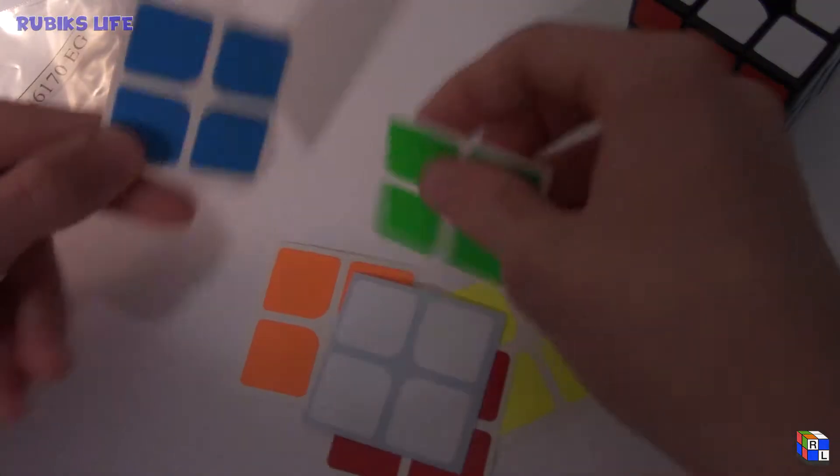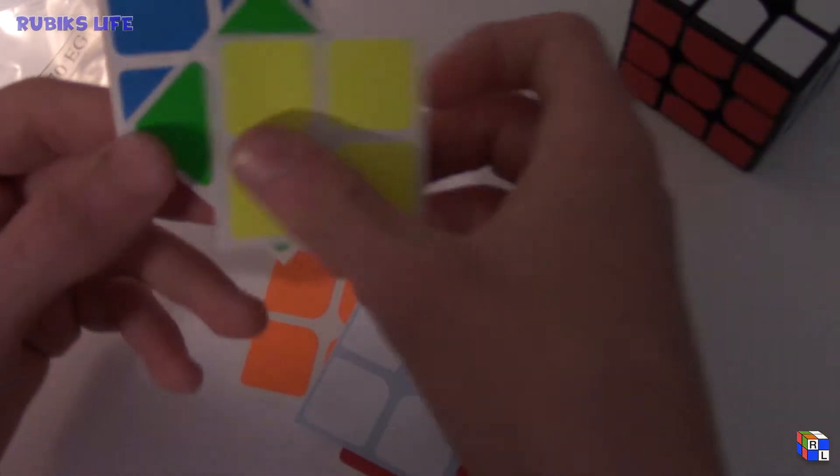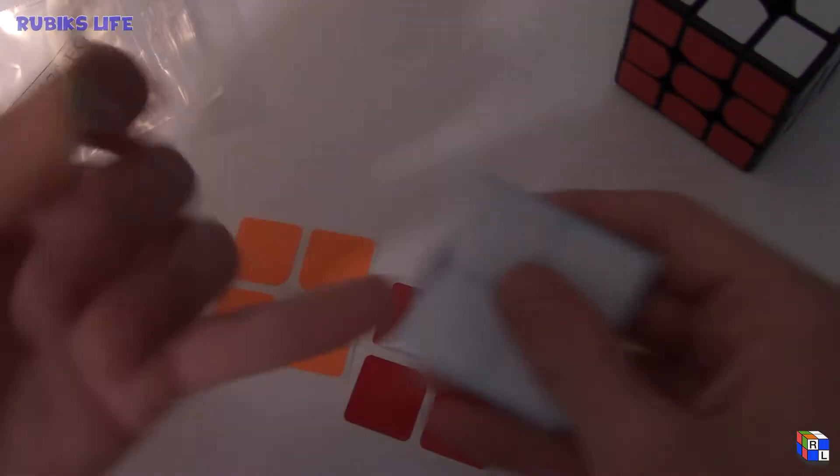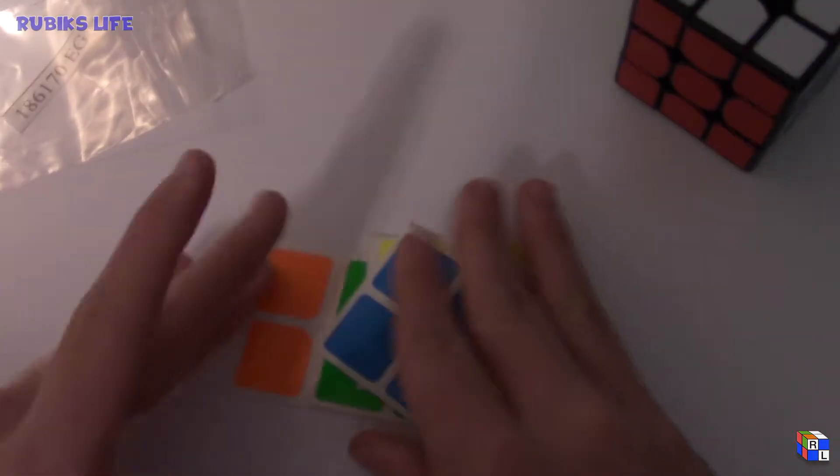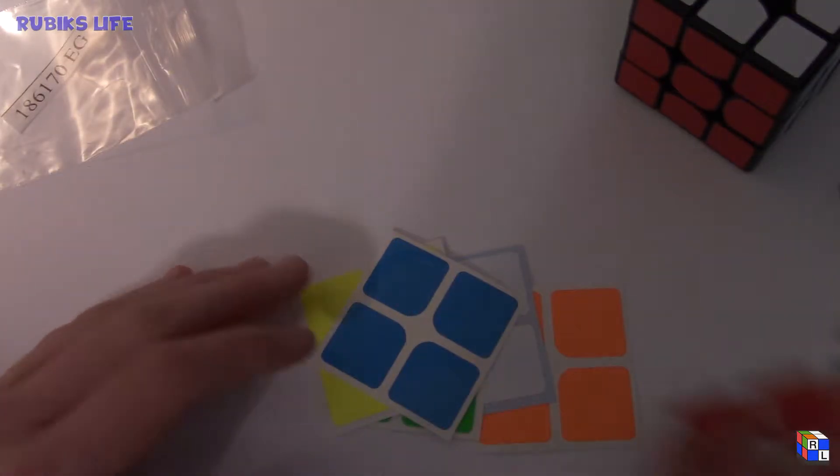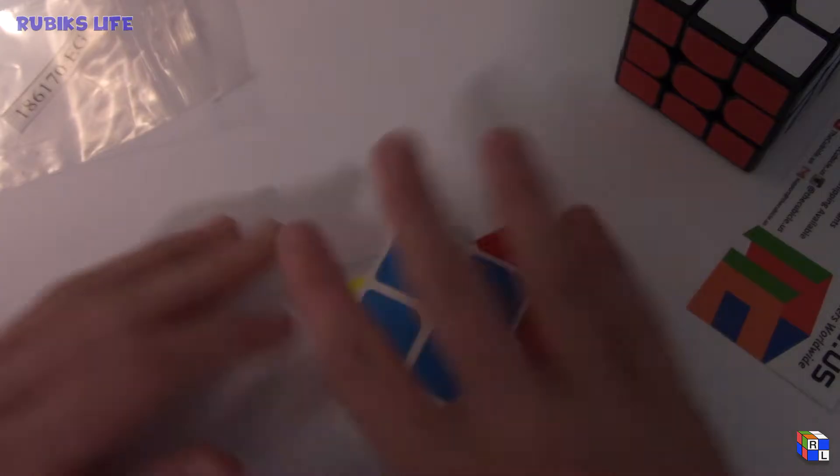It's a lot brighter. Got fluoro green, fluoro yellow, regular red, white. All these are fluoro except for the blue which is light blue this time. Those are just the stickers and I'll resticker that later.